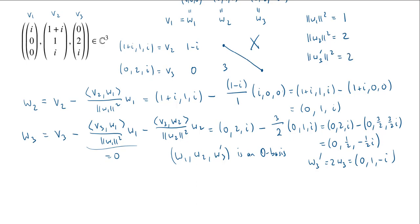Finally, we can now produce our orthonormal basis. We call those Es. E1 will be 1 over the length of W1 times W1. But the length of W1 is just 1, so this is actually just equal to W1, which was i, 0, 0.